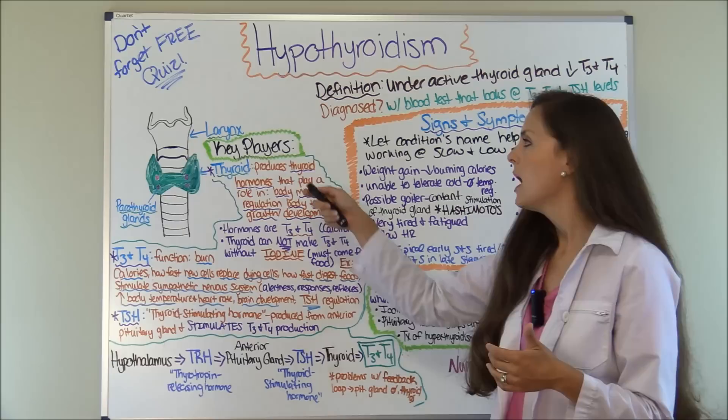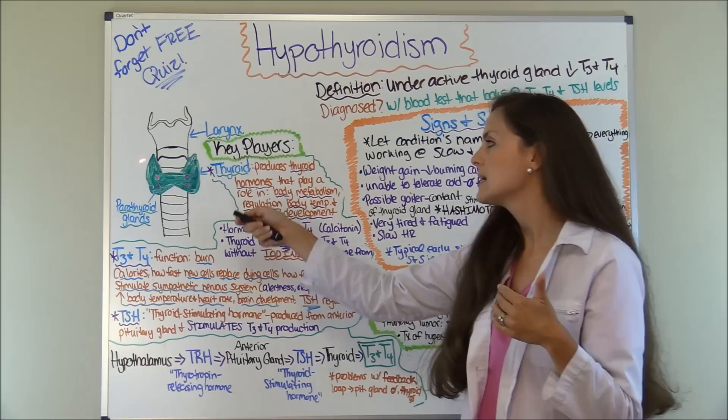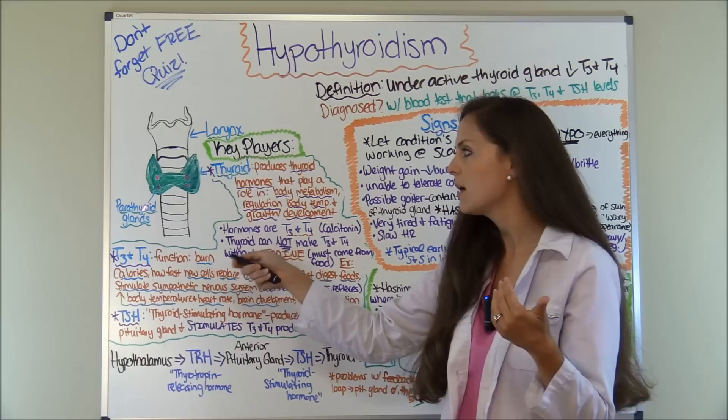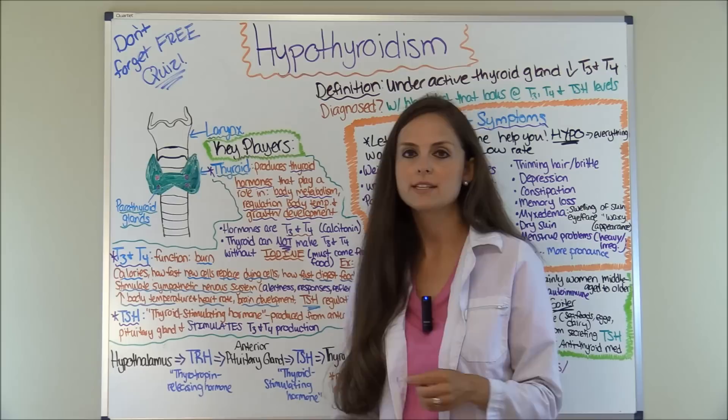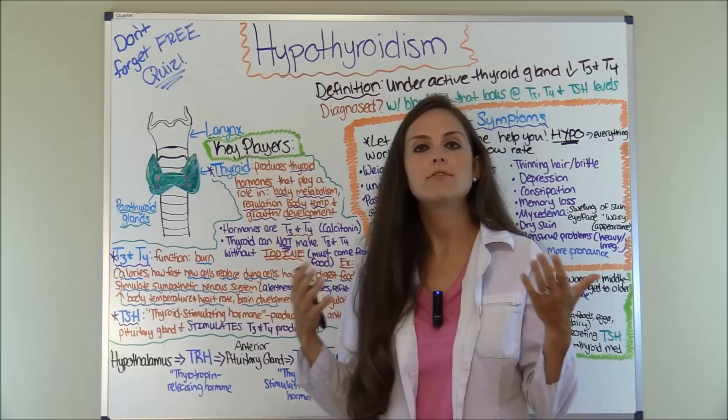Let's look at the anatomy of the thyroid gland. Your thyroid gland sits below your larynx, your voice box, right below the Adam's apple — the laryngeal prominence — and it's a butterfly-shaped gland. Inside the gland you have parathyroid glands, and your parathyroid is responsible for regulating your calcium levels. Anytime you have damage to the thyroid gland, like in a thyroidectomy, you have to watch the parathyroid too because you can have low calcium levels. Remember that for a thyroidectomy.